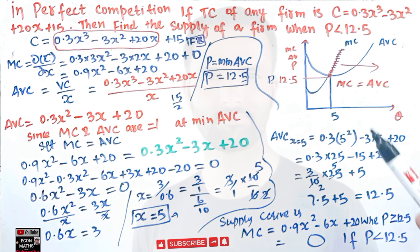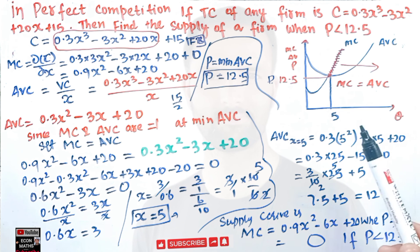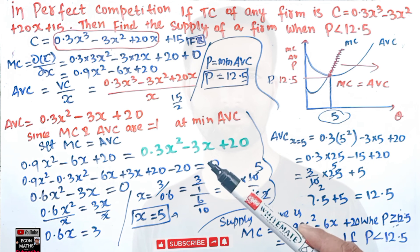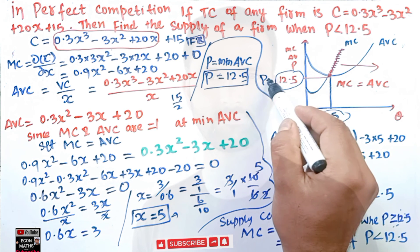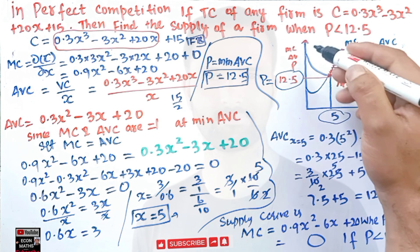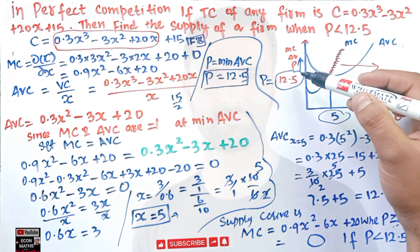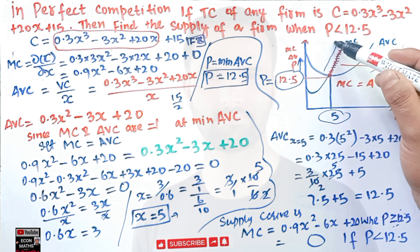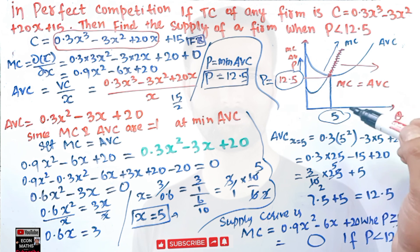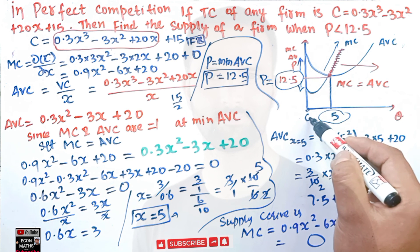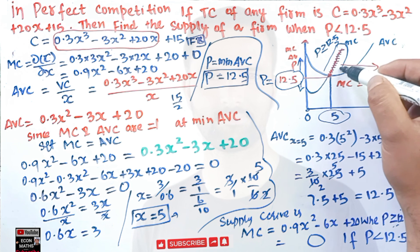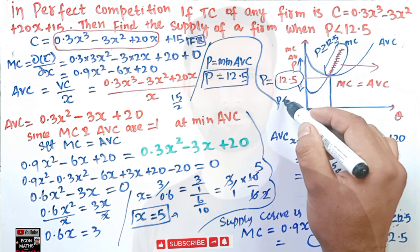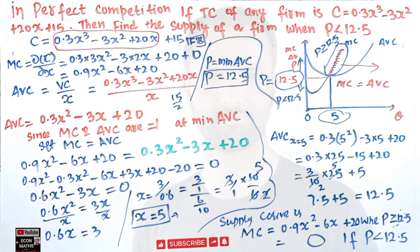The firm will shut down if price is less than 12.5, and continue to produce if price is greater than or equal to 12.5. As long as price is above 12.5, we are on the rising segment of the marginal cost curve above the AVC. If price is less than 12.5, the firm produces zero units of output.